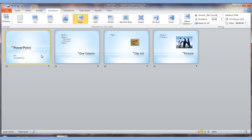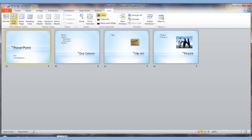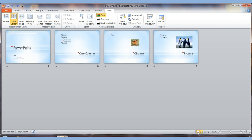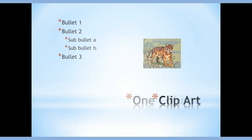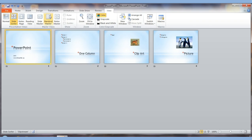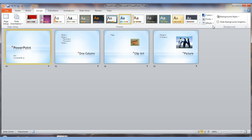Welcome back. This is part two of the PowerPoint video series. In part one, using Office 2010 — which is similar to Office 2007 — I showed you how to create slides, change their layouts, add pictures and clip art, use the outlining option to promote and demote lines, and the normal and slide sorter view buttons. We also looked at transitions and how to apply designs and background styles.